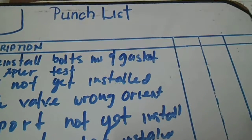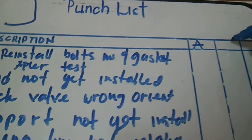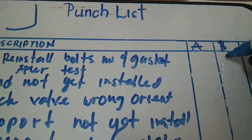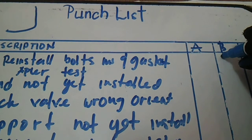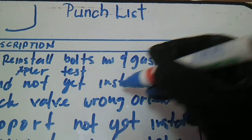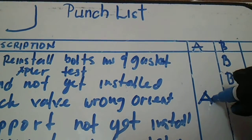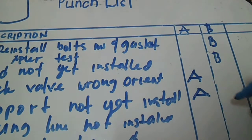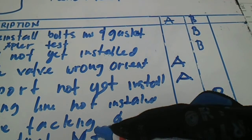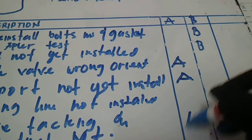Now we assign a category to each item. Reinstall bolts, nuts, and gasket — this is category B. Blind flanges not installed — category B also. Check valve wrong orientation — this is category A. Welded type support — category A. Tracing line — category B. Remove tucking from the pipe and conduct flush/empty — category A.